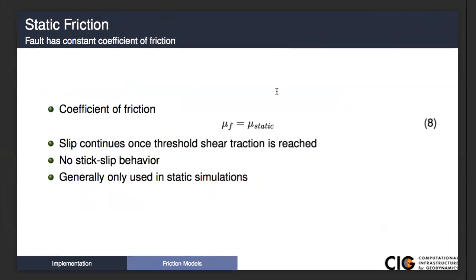Static friction: the coefficient of friction equals the static coefficient. One important thing to note is that if you're trying to do a quasi-static simulation with static friction, slip will continue once the shear traction is reached as long as the traction remains above the failure threshold — you will never get stick-slip behavior with static friction. So generally, if you're going to use static friction, only do it in the context of a static simulation, or if you're just looking at the lead-up to failure at the static coefficient of friction level.